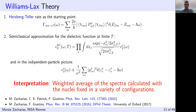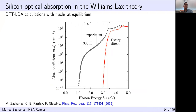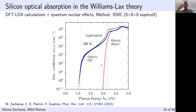We use the independent particle picture to focus on electron-phonon coupling effects. For silicon, with nuclei fixed at static equilibrium there is no absorption below the fundamental direct gap. Using the Williams-Lax theory and importance-sampling Monte Carlo we correctly capture indirect optical absorption and the correct absorption onset. Some deviation between theory and experiment is mostly attributed to not accounting for excitonic effects in our calculations.